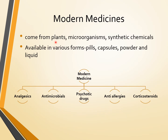Modern medicines come from plants, microorganisms, and synthetic chemicals, and are available in various forms: pills, capsules, powder, and liquid. The difference is that pills have the powder compressed into solid form, while capsules have a small container — a plastic casing — filled with the powder in medicine form, then sealed. They come in blue, colorless, or other colors.